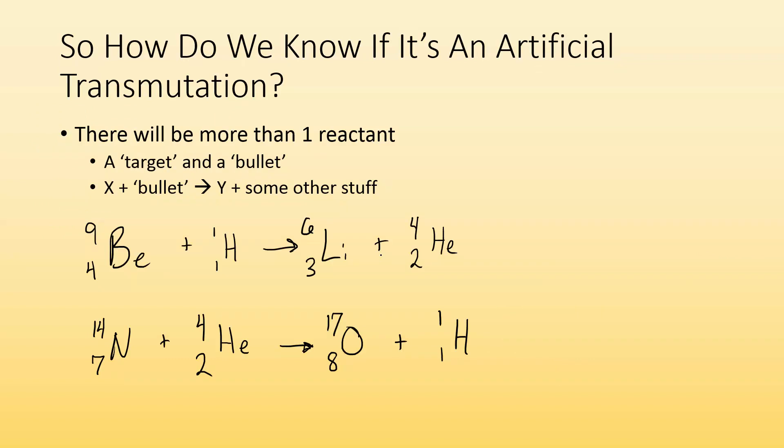How do we know if it's an artificial transmutation? You're going to have a target and a bullet. On the reactant side, you have two things - your nucleus that you're hitting and the bullet you're hitting it with, and you end up with a new element and usually a bunch of other stuff. Here I have beryllium, I hit it with a proton, a hydrogen nuclei, and it causes a transmutation to make lithium and an alpha particle. We start with two things on the reactant side, end up with a new element and other particles being given off.